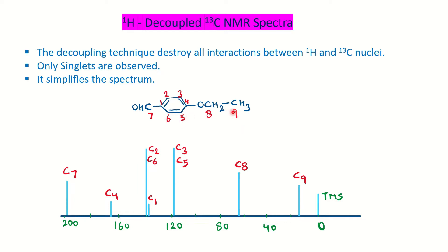Each different type of carbon has a certain chemical shift range, and by following the table you can find the respective range for different kinds of carbons. This is the proton decoupled carbon-13 NMR spectrum, which is very simplified. In the proton coupled case, each peak would be split by neighboring protons — CH3 would give a quartet, CH2 would give a triplet — resulting in a very complex spectrum. The decoupling technique simplifies this.